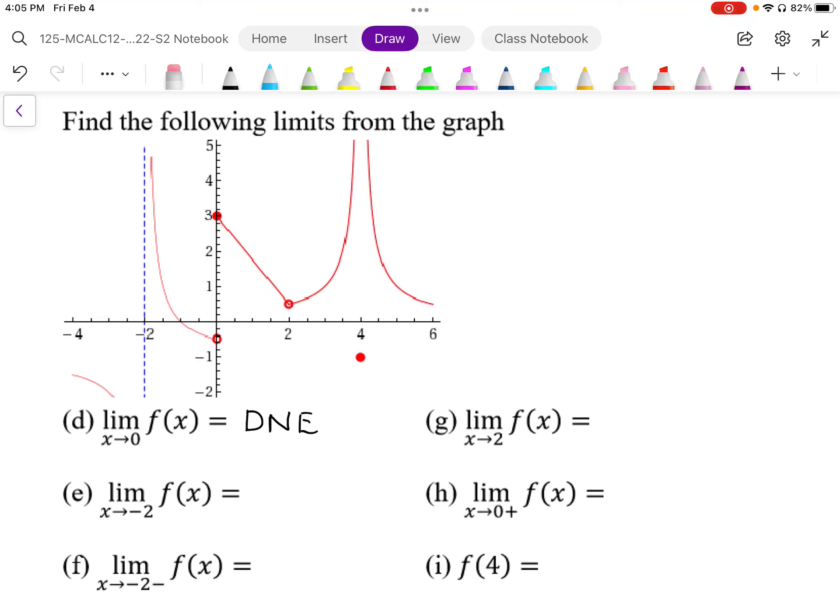So for negative 2, as x approaches negative 2 from both sides, it looks like it's approaching infinity this way. It's approaching negative infinity from the other way. So again, this is a two-sided limit, so we have to say that because it's going to two different places, that the limit does not exist.